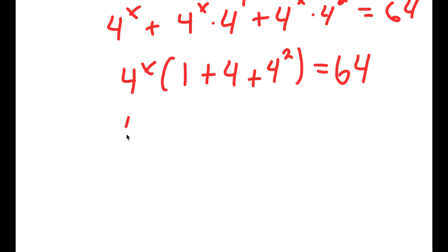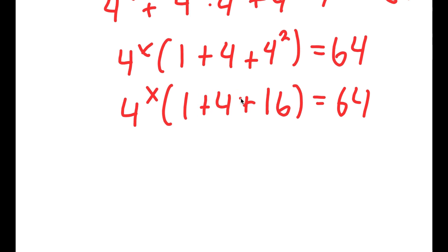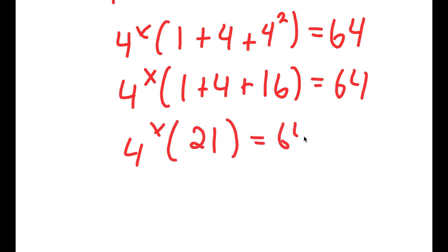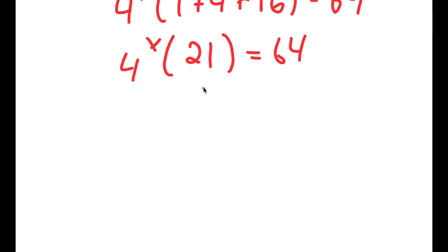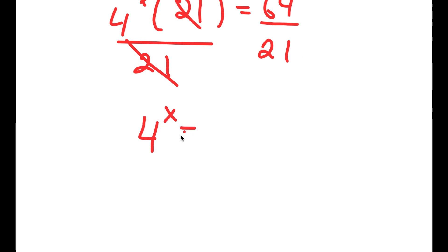And 4 squared is 16. So I get 4 to the power of x times 1 plus 4 plus 16. Now 1 plus 4 is 5, and 5 plus 16 is 21. So I get 4 to the power of x times 21 is equal to 64. Dividing both sides by 21, I get 4 to the power of x is equal to 64 over 21.